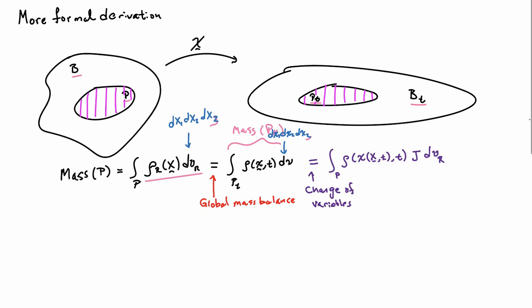Now, what I can do is do a change of variables on the second integral here. And I can write that as an integral over dVR. So, with respect to the capital X coordinates. And so, I'm doing a change of variables from little x to big X. And as we always do in multivariate calculus, when I do that change of variables, I need the Jacobian determinant of the change of variables.